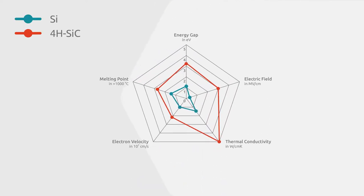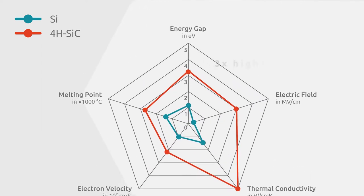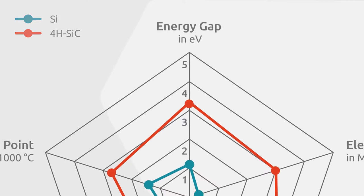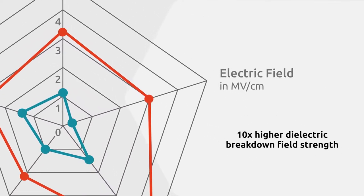Silicon carbide has unique properties that distinguish it from silicon. It has a three times higher energy gap, meaning it takes three times the energy to elevate an electron from the valence to the conduction band. This allows silicon carbide to extend a ten times higher electric field strength.